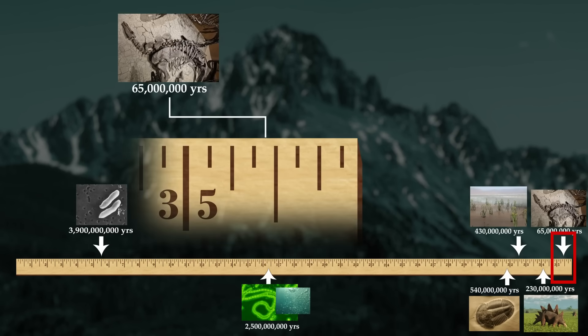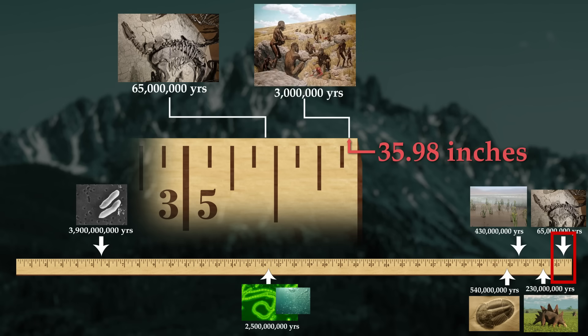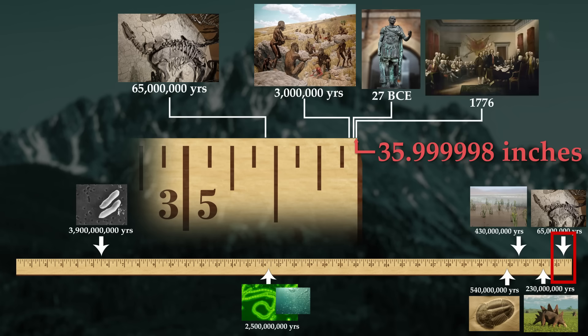Human history occupies a very short amount of geologic time. 3 million years ago, or at 35.98 inches, humans appeared in East Africa. In the year 27 BCE, or 35.99998 inches, the Roman Empire was founded. And in 1776, or 35.999998 inches, the United States of America was founded. That's just 2 millionths of an inch from the end of the yardstick.